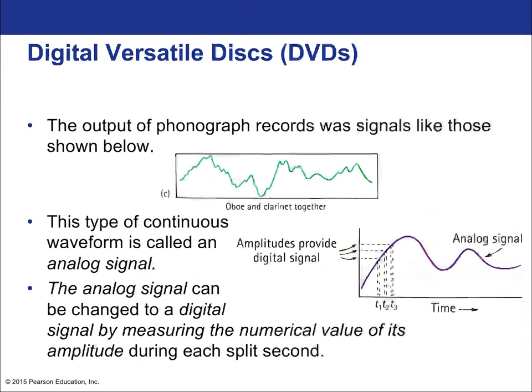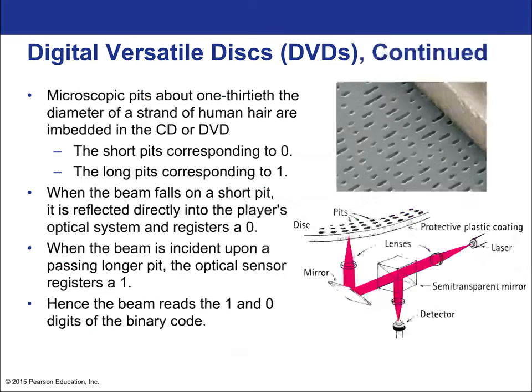The output of phonograph records was a continuous signal called an analog signal. An analog signal can be changed into a digital signal by measuring the numerical values of its amplitude during each split second — this is the idea of actually taking that measurement and perhaps doing a Fourier analysis.